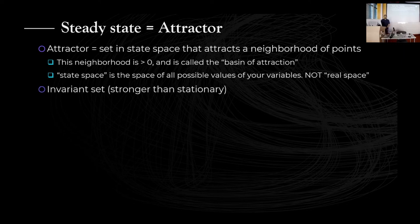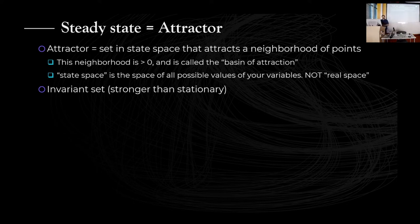Attractors are useful because they are invariant, and this is a property that is much stronger than stationarity in statistical terms. It means that if you take the attractor and simply evolve it forwards in time, you get exactly the same set. This is a really nice quantity if I want to call something a steady state — it really captures the word 'steady.'